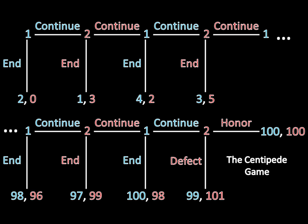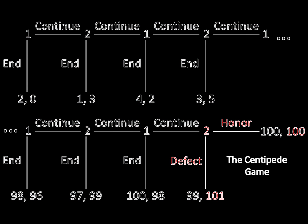So how do we solve this game? You might think it's going to be very difficult because we have so many different information sets — in fact more than we see on the screen because of the dot dot dots. But this is going to be really easy because it's just a very elongated version of backward induction. We start at the end and work our way backward. Let's start where player 2 is defecting or honoring. If she honors she gets 100; if she defects she gets 101. 101 is greater than 100, so she's going to defect.